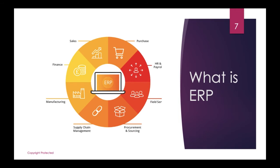Before proceeding further, I want to make a disclaimer: the slides you are seeing were not all made by me — they are taken from the internet, and wherever possible I have provided credit to the author. Coming back to what is ERP: as I was saying, there is sales, purchase, finance, manufacturing, supply chain management, procurement, field service, HR, and payroll — everybody has their individual needs. We need a common software and database where everybody is connected and everybody's activity is bound together to serve the common goal of the organization.